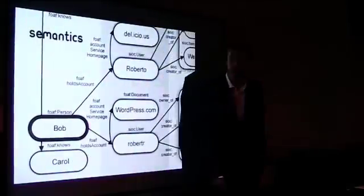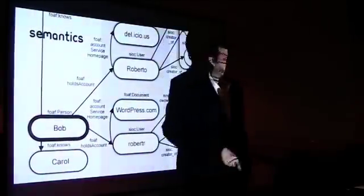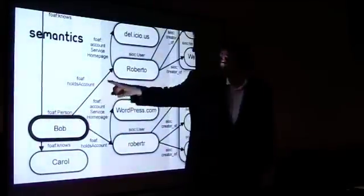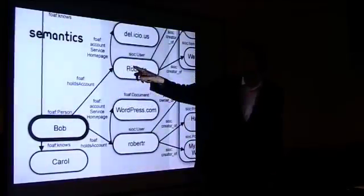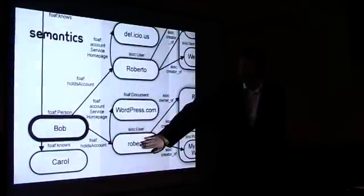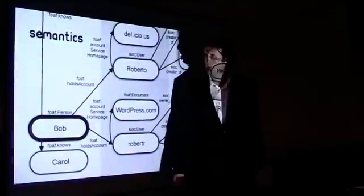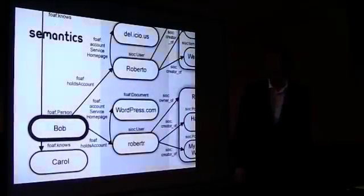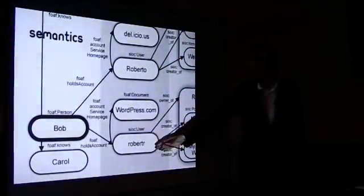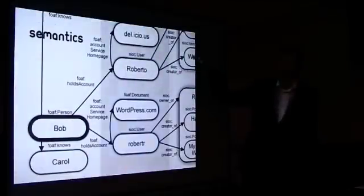So for example, we've got Bob and Carol here. They're two people. They're not documents, they're people. And there's a link between them that says Bob knows Carol. So it's a graph that's connecting Bob and Carol. And then there's another link from Bob that says he's got an account, he holds an account that's called Roberto. And maybe he holds another account that's called Robert. And maybe this account is on WordPress.com and this account is on Delicious. And everything is connected in this kind of this graph. Maybe Bob knows somebody else who's off screen there called Alice. Maybe using his account, Roberto, he created some bookmarks. Maybe using his account, Robert, he created some blog posts. So everything kind of is connected through this graph.